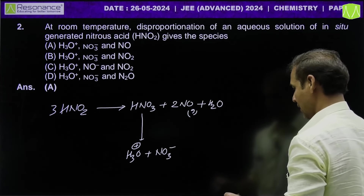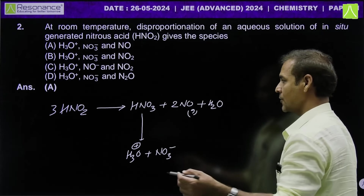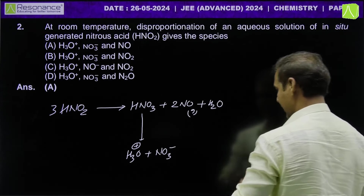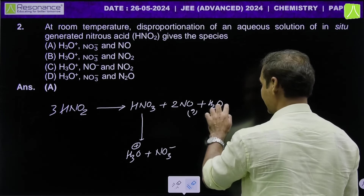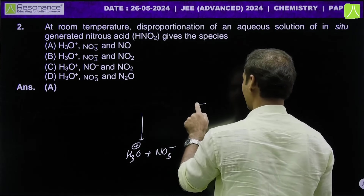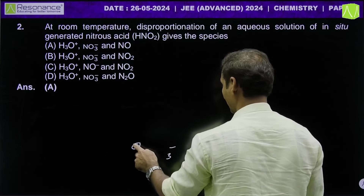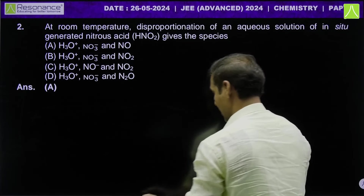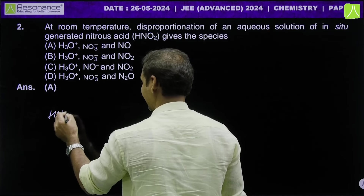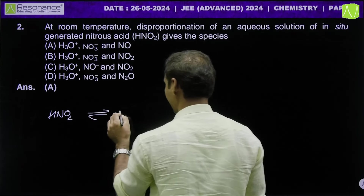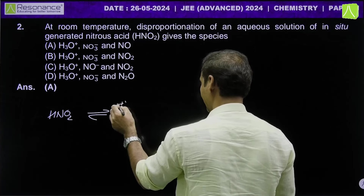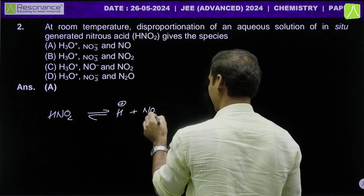Let us look at how HNO2 gives HNO3 and NO. This is a mechanism we need to know because it relates to both organic and inorganic chemistry. HNO2 is a weak acid. In aqueous solution, it will dissociate into H+ and NO2 minus.